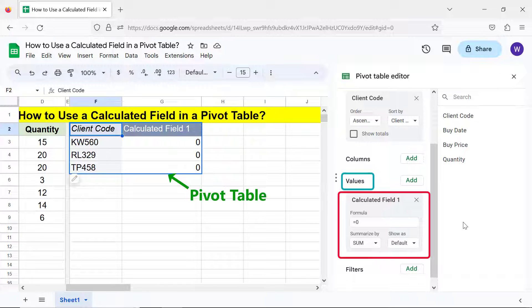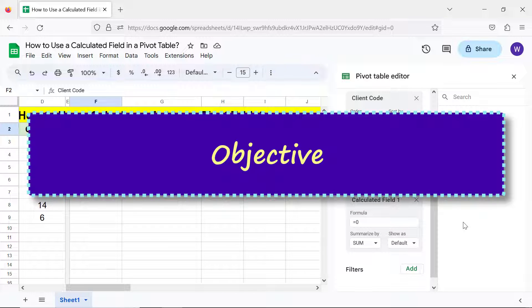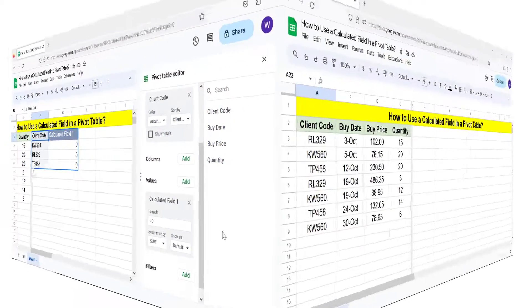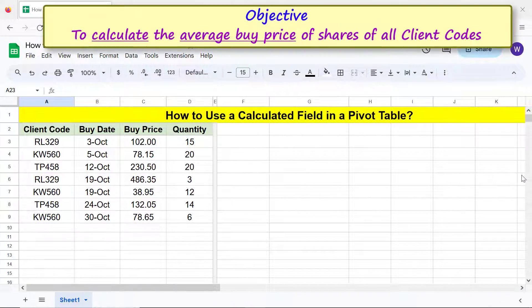Objective: To calculate the average buy price of shares of all client codes.